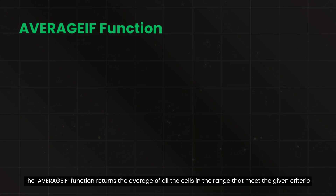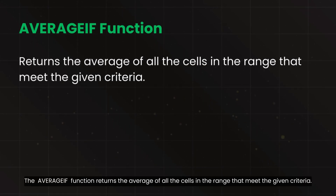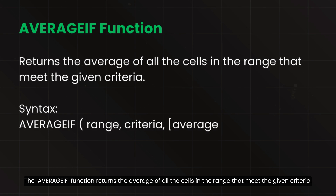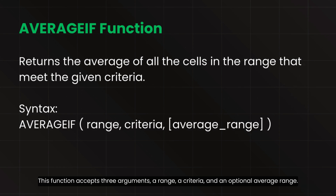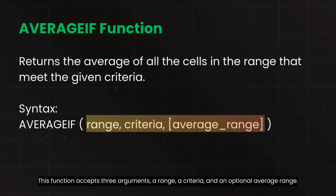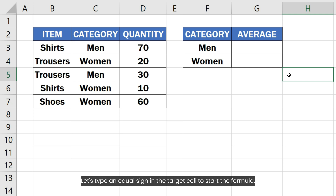The AVERAGEIF function returns the average of all the cells in the range that meet the given criteria. This function accepts three arguments: a range, a criteria, and an optional average range. Let's type an equal sign in the target cell to start the formula.